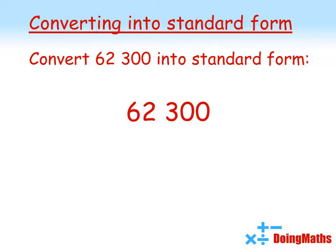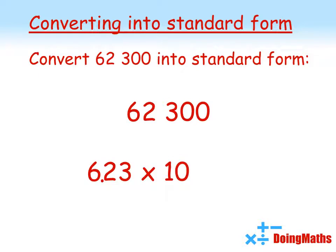Let's look at a slightly more complicated version. So 62,300 — we're going to change that into standard form. We find the non-zero part, which is 623, and bring that down. Now we need to work out where to put the decimal point so that we have a number between 1 and 10. If we put it between the 6 and the 2 we get 6.23, which is between 1 and 10, so we'll go with that. For standard form it has to be times by 10 to the power of something. Looking at the decimal point of 62,300, to get to 6.23 we'd have to move four places. So in standard form we have 6.23 times 10 to the power of 4. The top one is written in normal form; the bottom one is written in standard form.